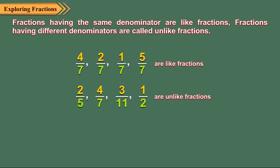Fractions having the same denominator are like fractions. Fractions having different denominators are called unlike fractions. Four upon seven, two upon seven, one upon seven and five upon seven are like fractions because each one has the same denominator, seven. Two upon five, four upon seven, three upon eleven and one upon two are unlike fractions because these have different denominators.